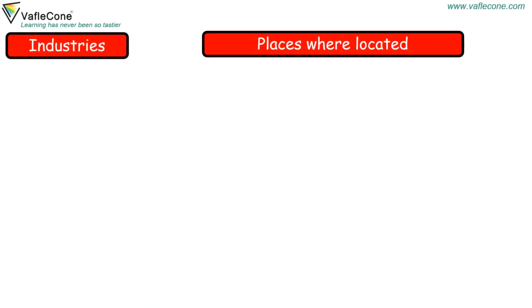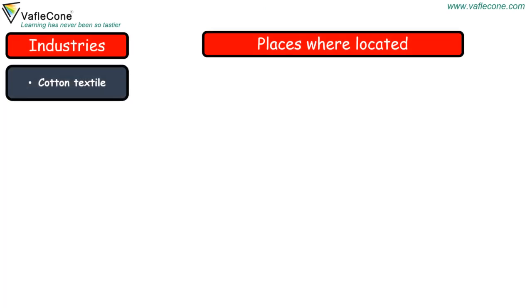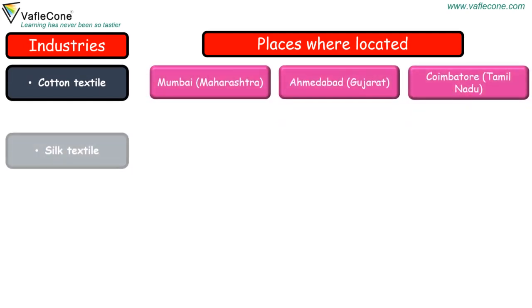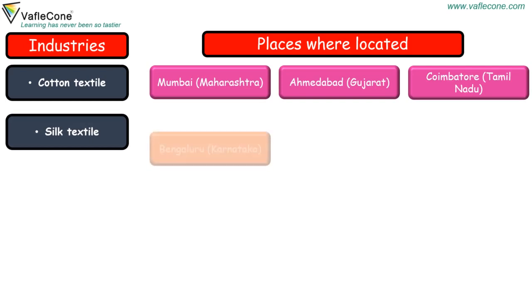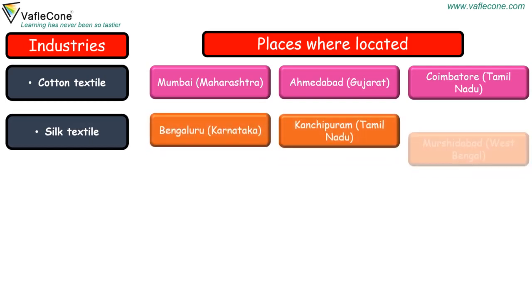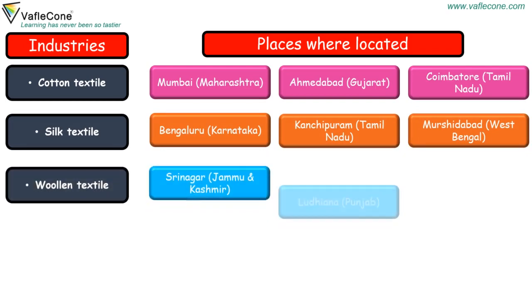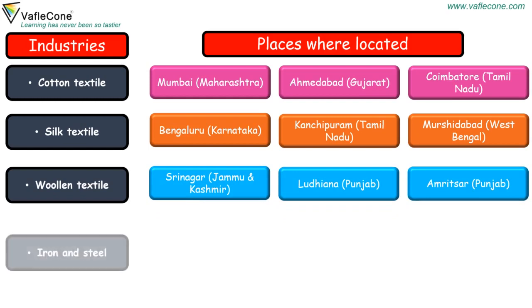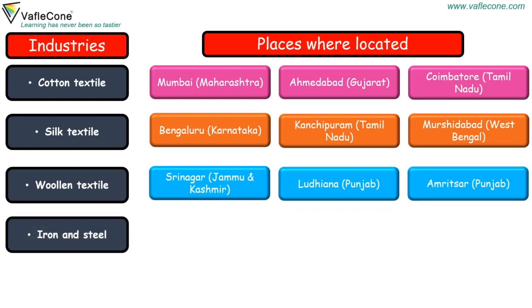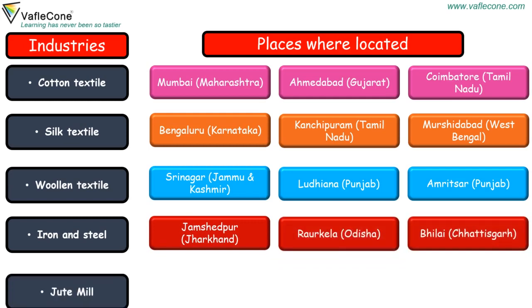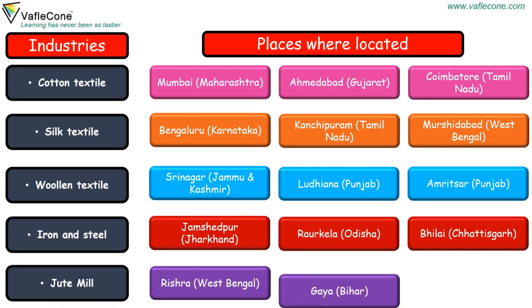Now let's see the names of industries and the places where they are located. Cotton Textile is located in Mumbai, Ahmedabad, and Coimbatore. Silk Textile is located in Bengaluru, Kanchipuram, and Murshidabad. Woolen Textile is located in Srinagar, Ludhiana, and Amritsar. Iron and Steel is located in Jamshedpur, Rourkela, and Bhilai. Jute Mill is located in Rishra, Gaya, and Guntur.